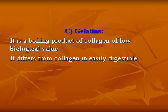The third type of scleroprotein is gelatin. It is a boiling product of collagen. Gelatin is a low biological value protein but differs from collagen in that it is easily digestible.